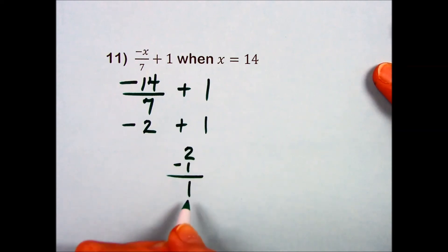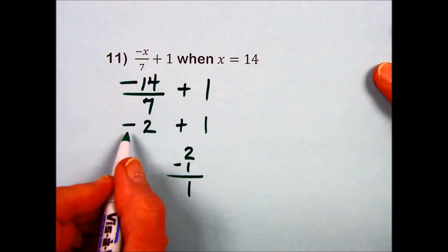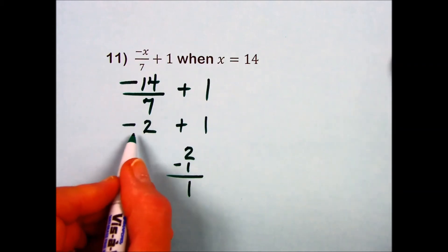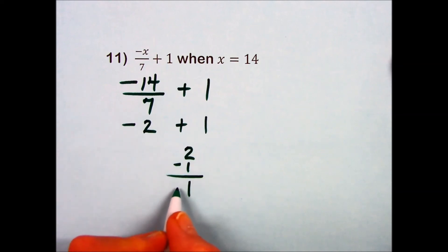And then putting the same sign of the larger looking number on our result. The larger of the two numbers was negative 2, so the result is going to be a negative 1 for the answer to the problem.